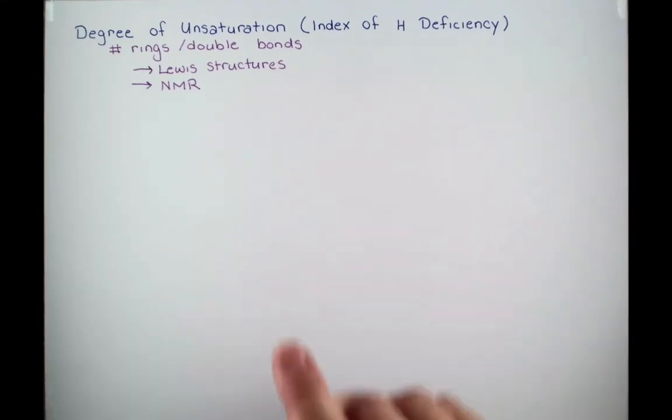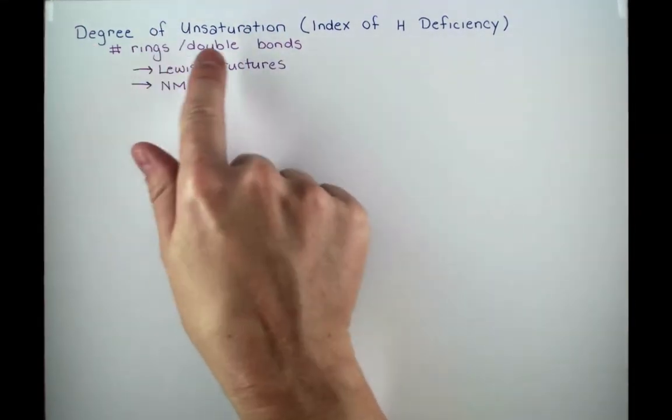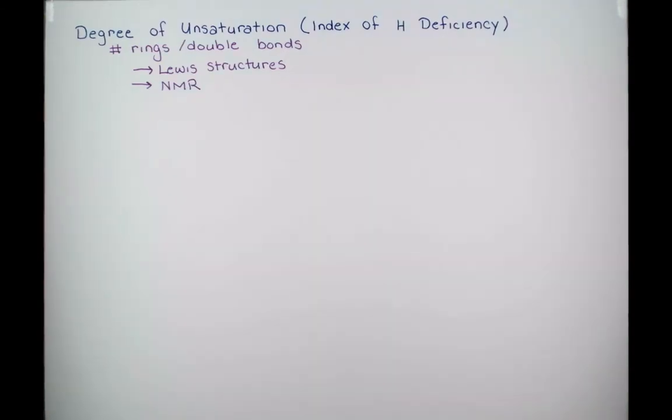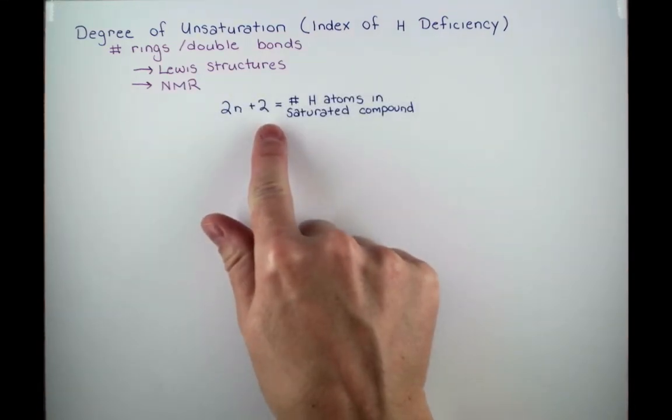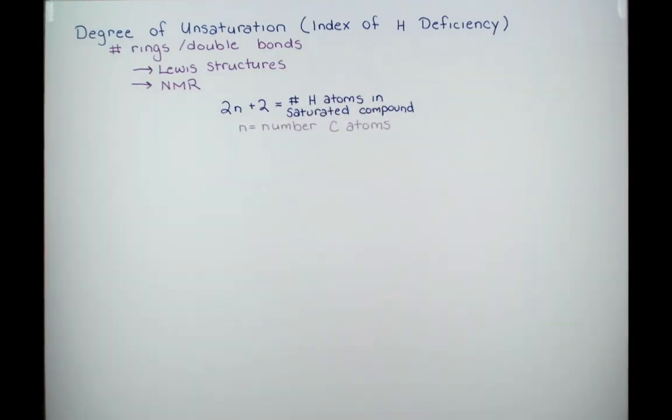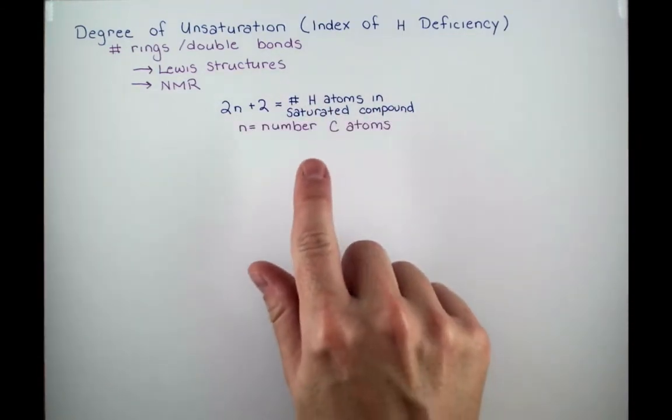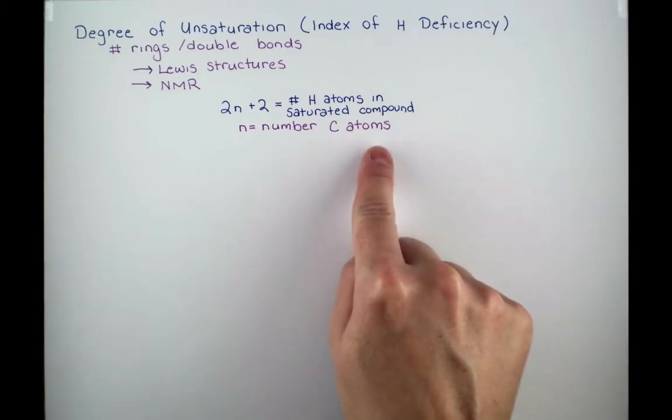So if the degree of unsaturation tells us the number of rings and double bonds, what we need to know is how many hydrogen atoms we should expect in the saturated compound. Now the saturated compound will have no rings, no double bonds, and it's going to be saturated with hydrogens. It's going to have the most hydrogen atoms that it can. We can use this equation, 2n plus 2, to figure out the number of hydrogen atoms in the saturated compound, where N is the number of carbon atoms in the formula.